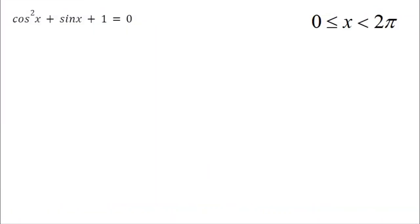We're going to look at an example where we're going to be solving some trigonometric equations with identities, because some of them are pretty advanced. In this problem, we're going to solve for all values of x from 0 to 2π. So now if I look at this, I have cosine squared plus sine of x plus 1 equals 0. It's pretty difficult to solve a trigonometric equation when you have multiple different trig functions — a cosine of x and a sine of x. One strategy is factoring, but I can't factor anything out here; there's nothing common between these terms.